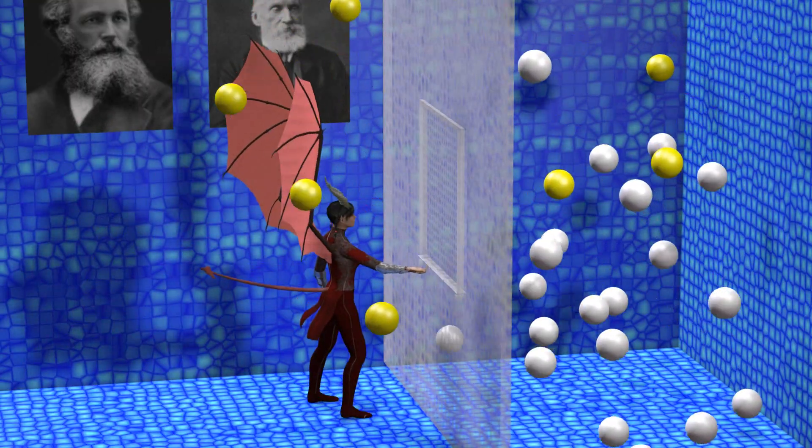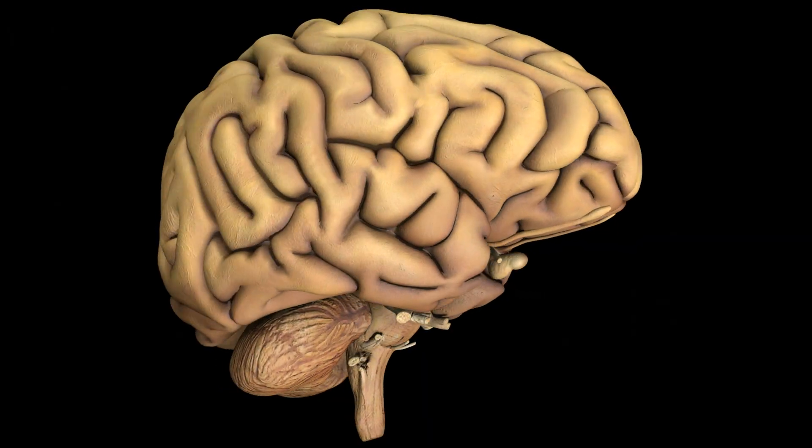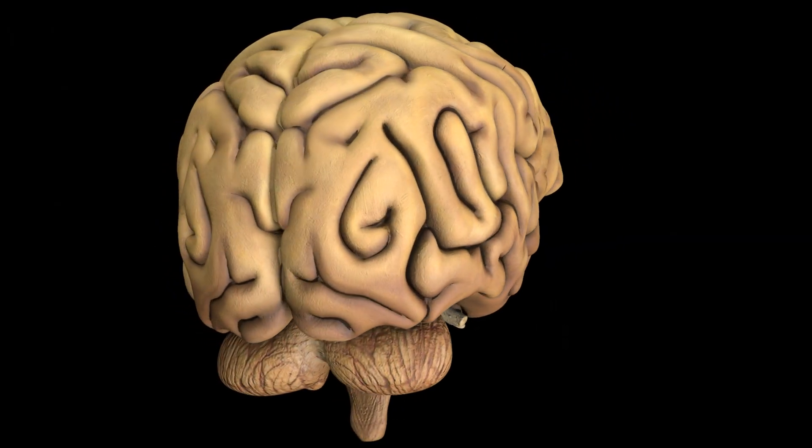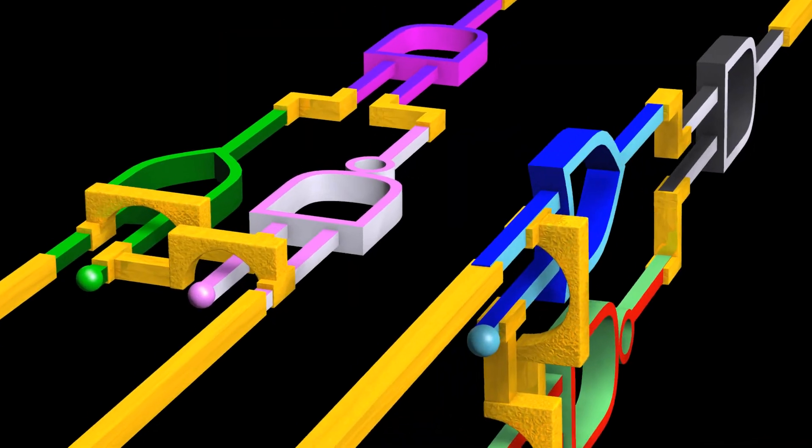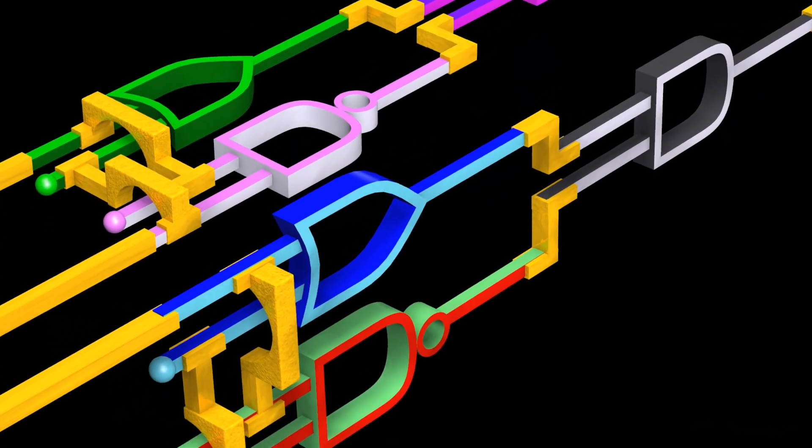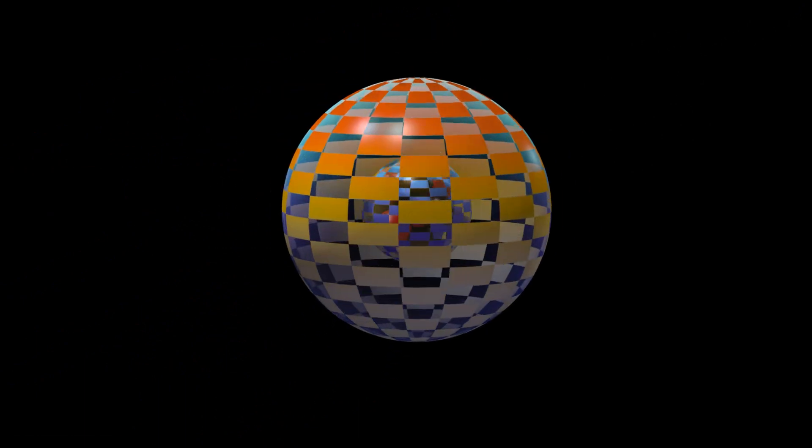Information is entropy, and regardless of what physical system is used to store information, whether it be the biological neurons of a brain, the electronic logic gates of a computer, or the quantum states of subatomic particles.